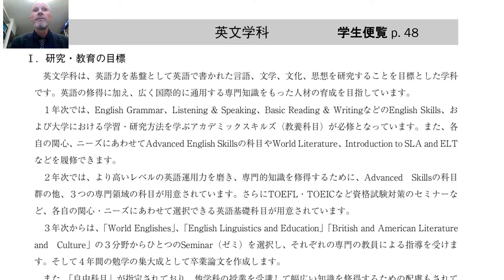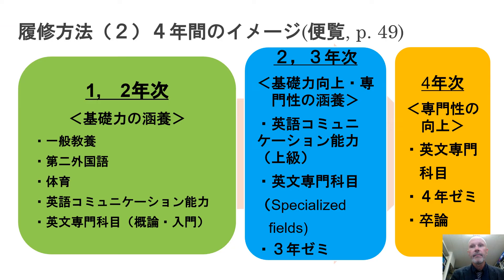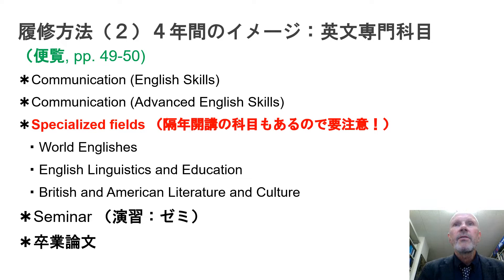If you look at page 48 of the student manual, it gives you an idea of how you can take those credits in the English department — a breakdown of how you can take these courses over the course of four years. Pages 49 to 50 give more detail. Basically you have communication English skills and advanced English skills, and then specialized fields: world Englishes, English linguistics and education, British and American literature and culture. Then you go on to take your seminar — the Zemi — and write your graduation thesis.